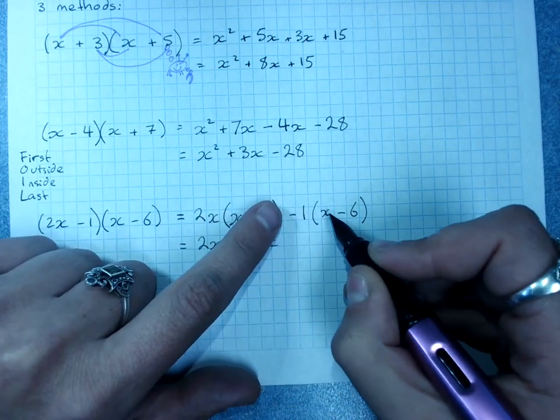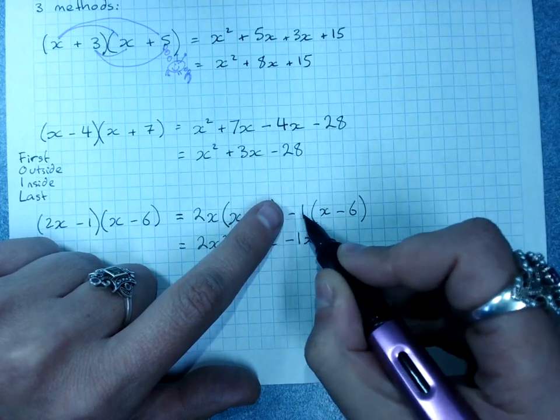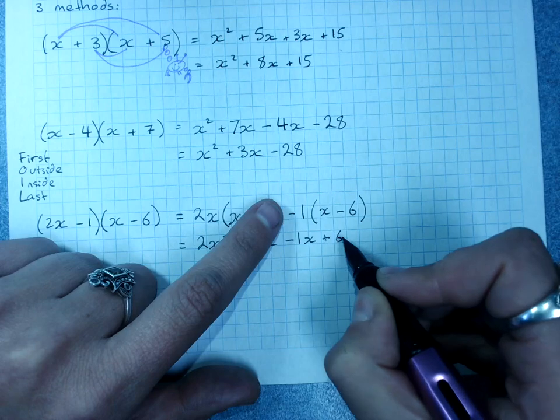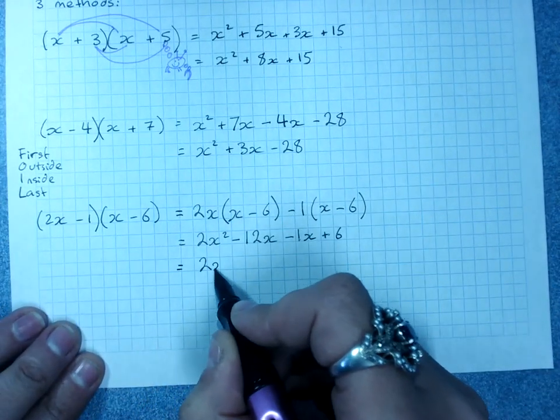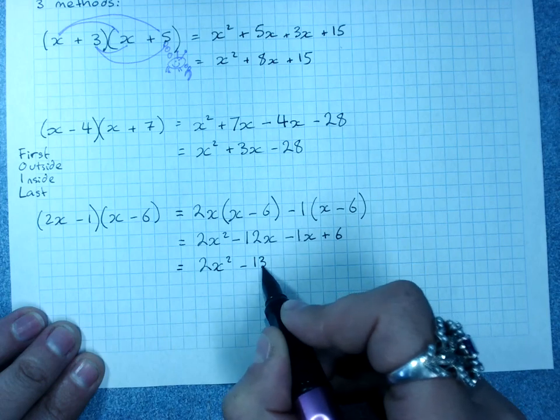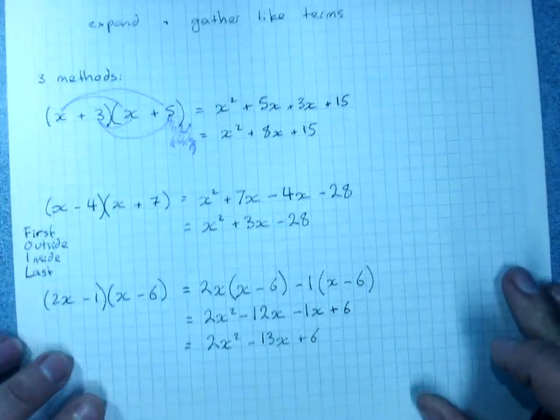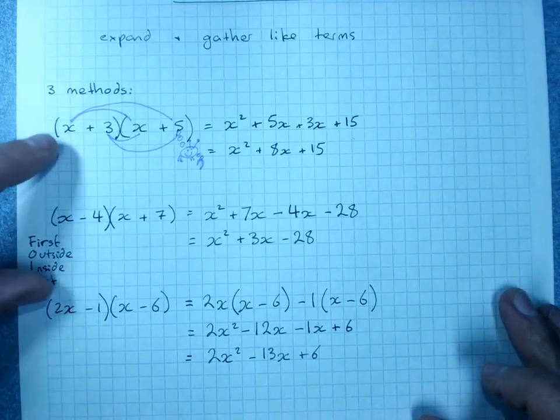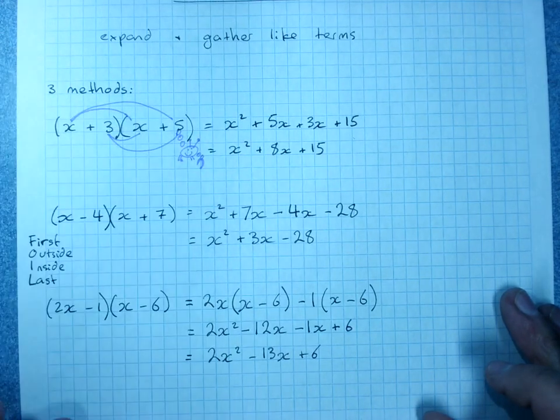Negative 1 times x is minus 1x, or minus x. Negative 1 times negative 6 is plus 6. Then we gather our like terms. 2x squared minus 13x plus 6. So that's three different perfectly acceptable ways of multiplying everything in the first bracket by everything in the second bracket.